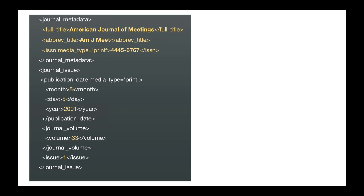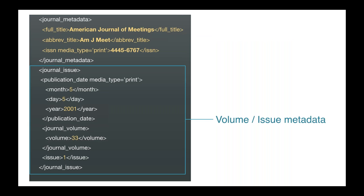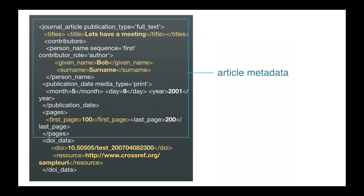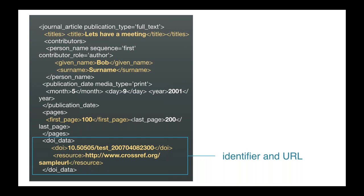Here's a basic journal article deposit. It contains journal metadata such as the title, ISSN, and issue and volume information — volume, issue numbers, and dates. You can also assign an identifier to a specific journal or journal issue if you'd like; those are optional. A journal article has basic metadata like article title, author name, publication date, pages, and of course the identifier information. At the bottom is the identifier and the URL — that's where you provide us with the URL that the DOI will resolve to.